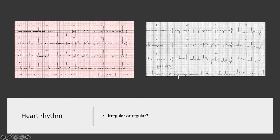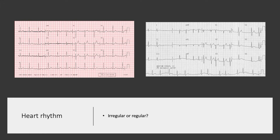On the other side, we have an irregular heart rhythm — the gaps between each of the QRS complexes are completely different and quite random. This is a condition called atrial fibrillation, which you'll learn about later in more detail.